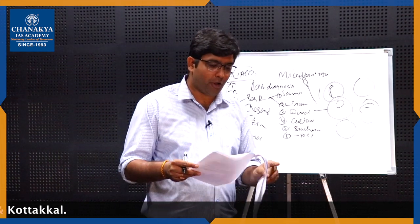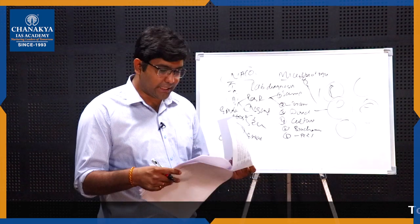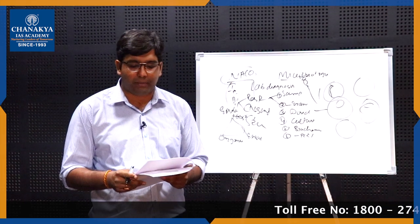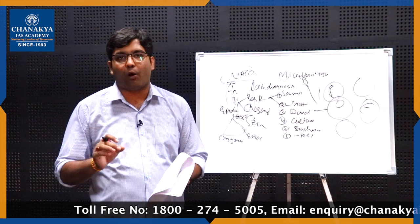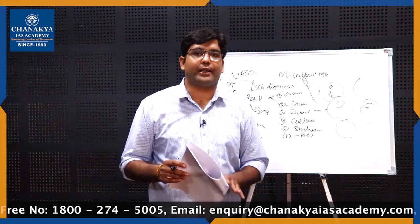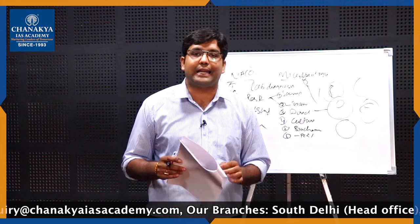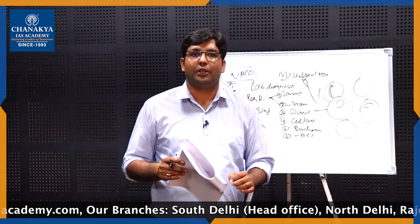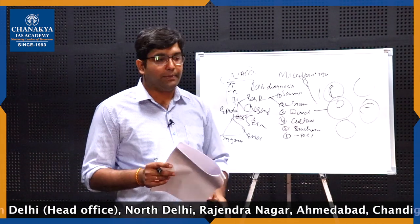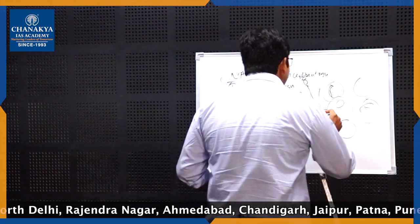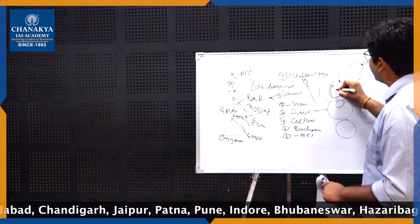Now we will move to forensics. The first question: define head injury and write the mechanism of coup and contrecoup brain damage. Forensics is much more about law and technicalities. What is important in forensics is to write the exact definition from the book — you cannot have a definition of your own. Remember the definitions of forensics word for word. For injuries, draw the diagram of the body — for head injury, draw where the coup injury happens and where the contrecoup injury happens.